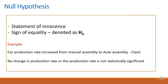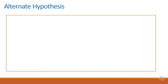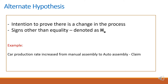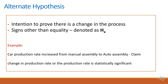So let's see the alternate hypothesis. Let's look at the alternate hypothesis: the intention is to prove there is a change in the process. In the alternate hypothesis, let's look at the change in the process. Same example: car production rate increased from manual assembly to auto assembly. Suppose we want to prove that the change in the production rate is statistically significant.